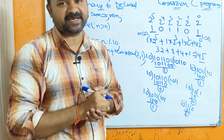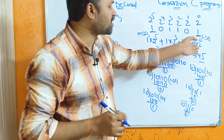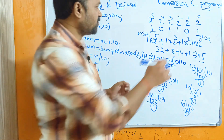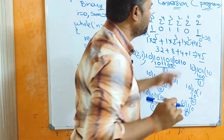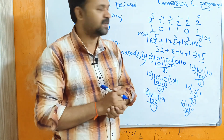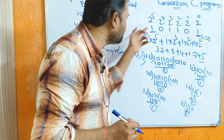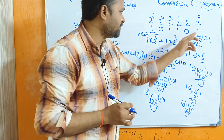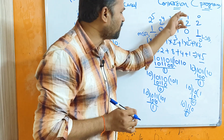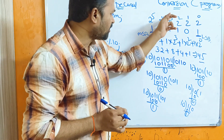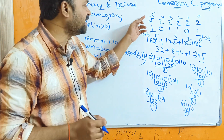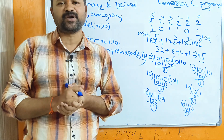We always start from the least significant bit. On top of the LSB we write the weight as 2 power 0, then moving toward the MSB: 2 power 1, 2 power 2, 2 power 3, and so on. Then we multiply each weight with the corresponding bit.